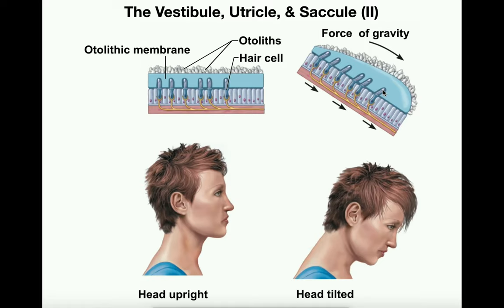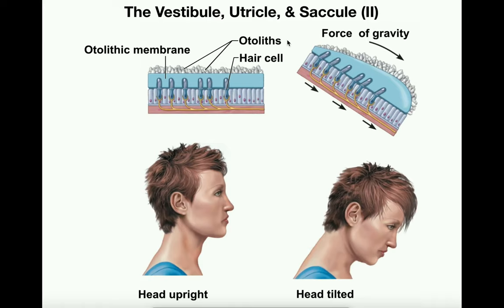The opposite is true if the head tilts backward: the otoliths move toward the left, pulling the otolithic membrane and hair tufts left as well. So this illustrates what happens when your head is simply not in equilibrium — either bent forward or bent back. Looking at slides A, B, and C: in A, with the head upright, the cilia are not being moved in either direction because we're in equilibrium. However, notice that the axons are still firing at a baseline or tonic level — they don't stop firing entirely.